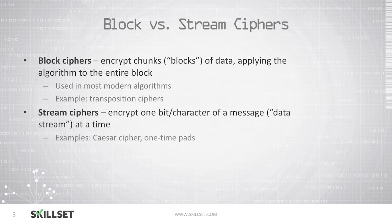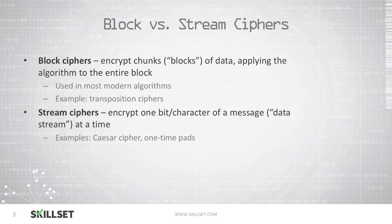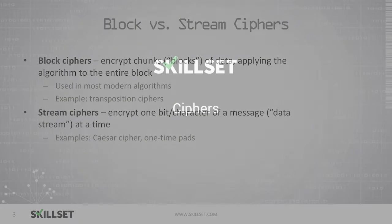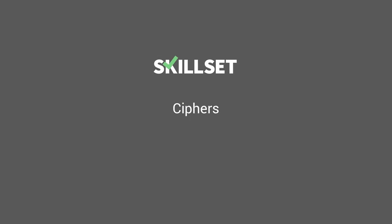For the CISSP exam, you should be familiar with the difference between a stream cipher and a block cipher. Very simply, a stream cipher encrypts the data one bit at a time as it streams into the algorithm, and a block cipher breaks up the data to be encrypted into blocks and then encrypts the data one block at a time. This concludes our ciphers module. Thank you for watching.